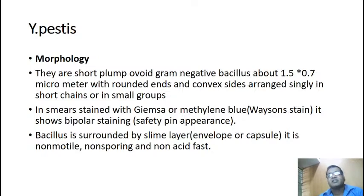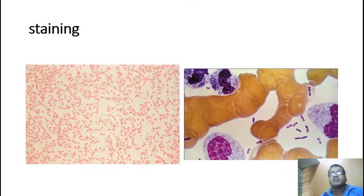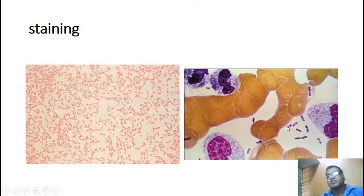It has a slime layer, that is an envelope or capsule. It is non-motile, non-sporing and non-acid fast. Methylene blue is a simple stain — a one-step procedure. As you can see, the central part is not stained, only the edges and ends are stained, and this is the cell wall. This safety pin appearance is seen on Giemsa and methylene blue staining. Gram staining shows gram-negative bacilli.